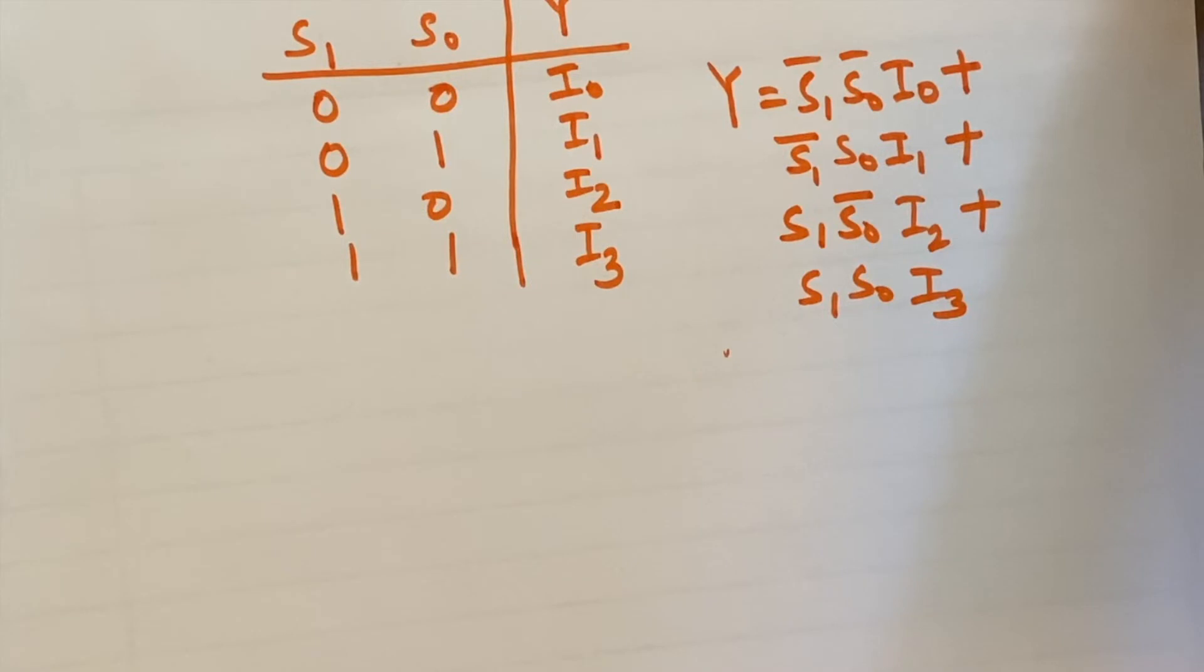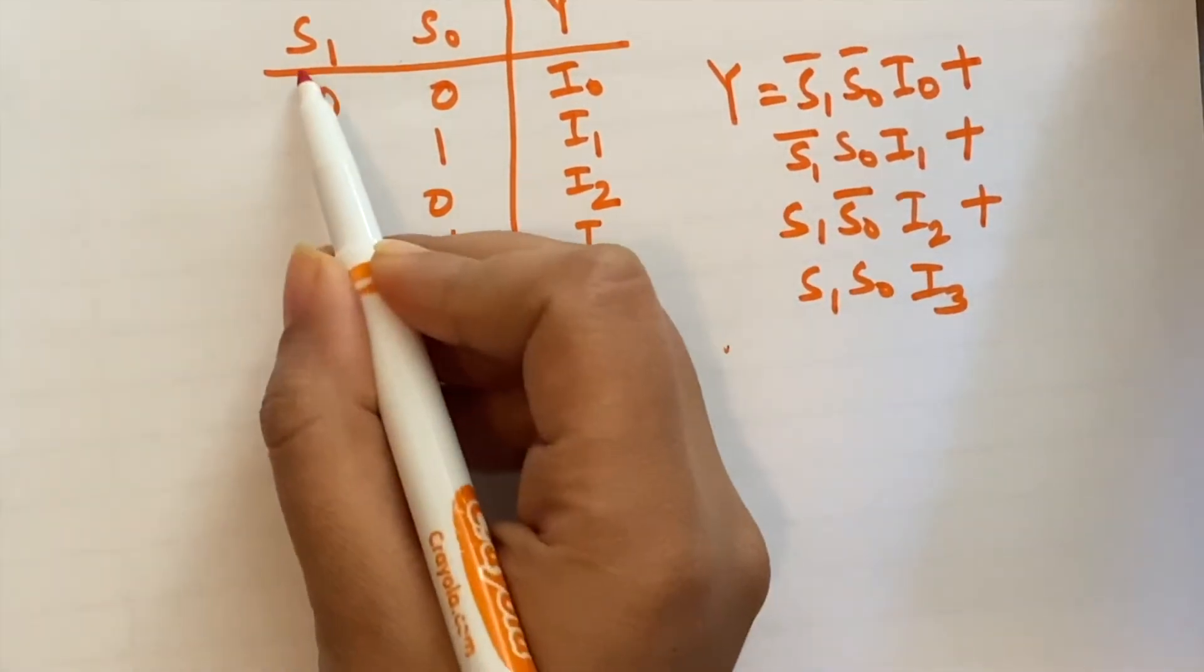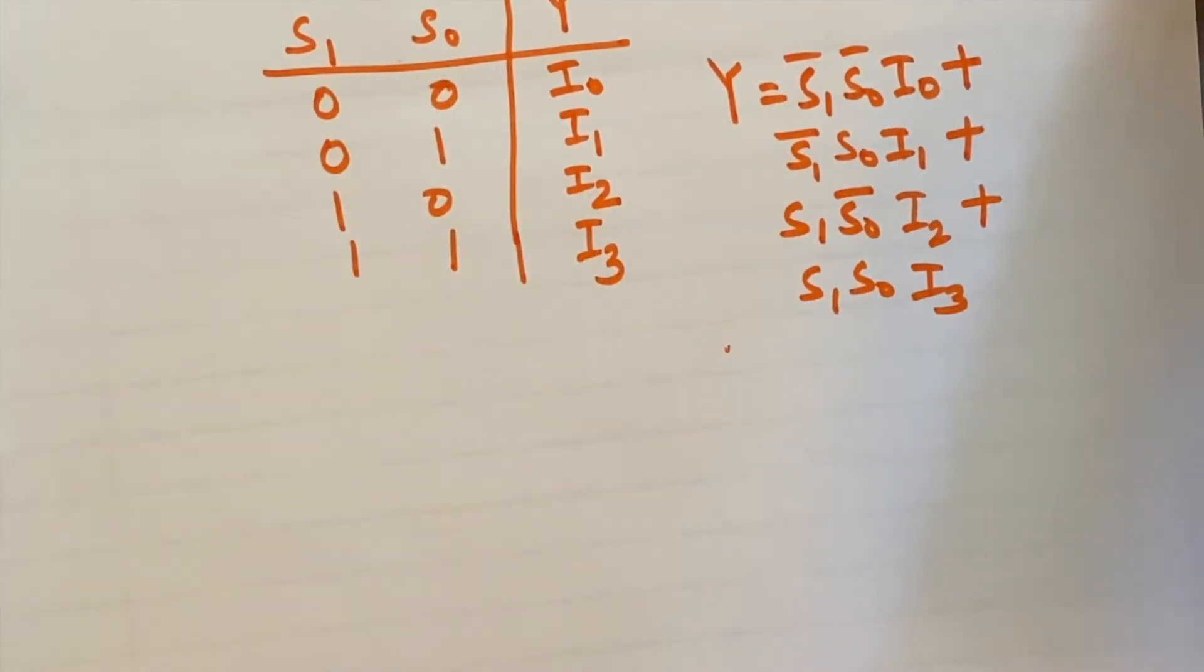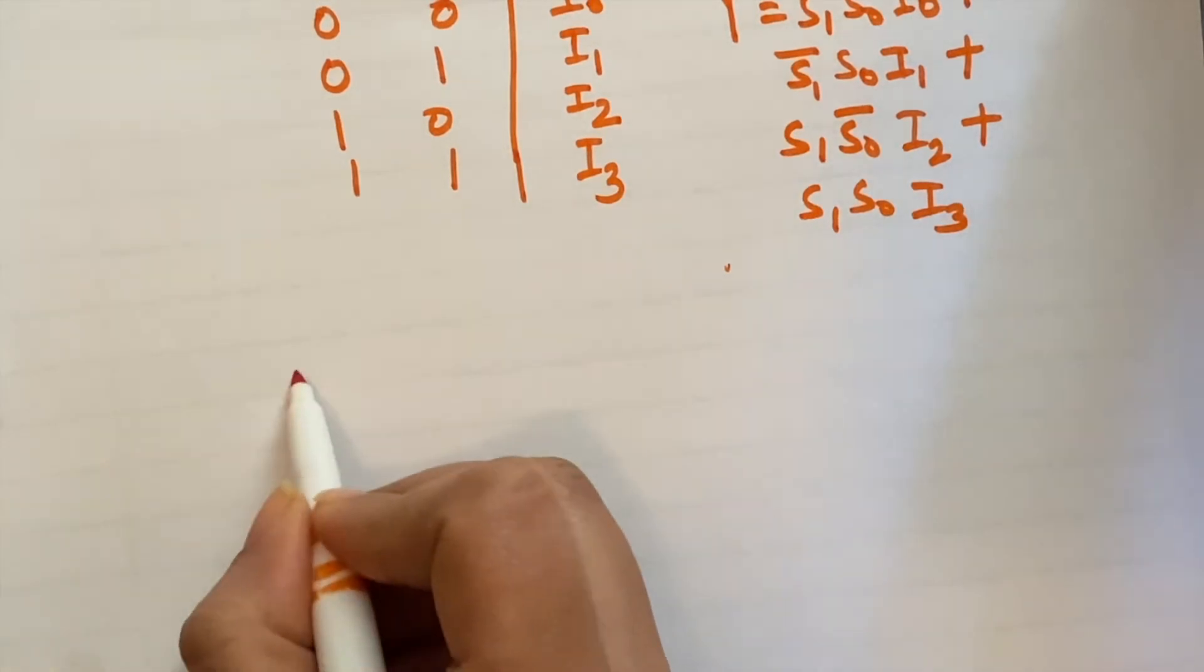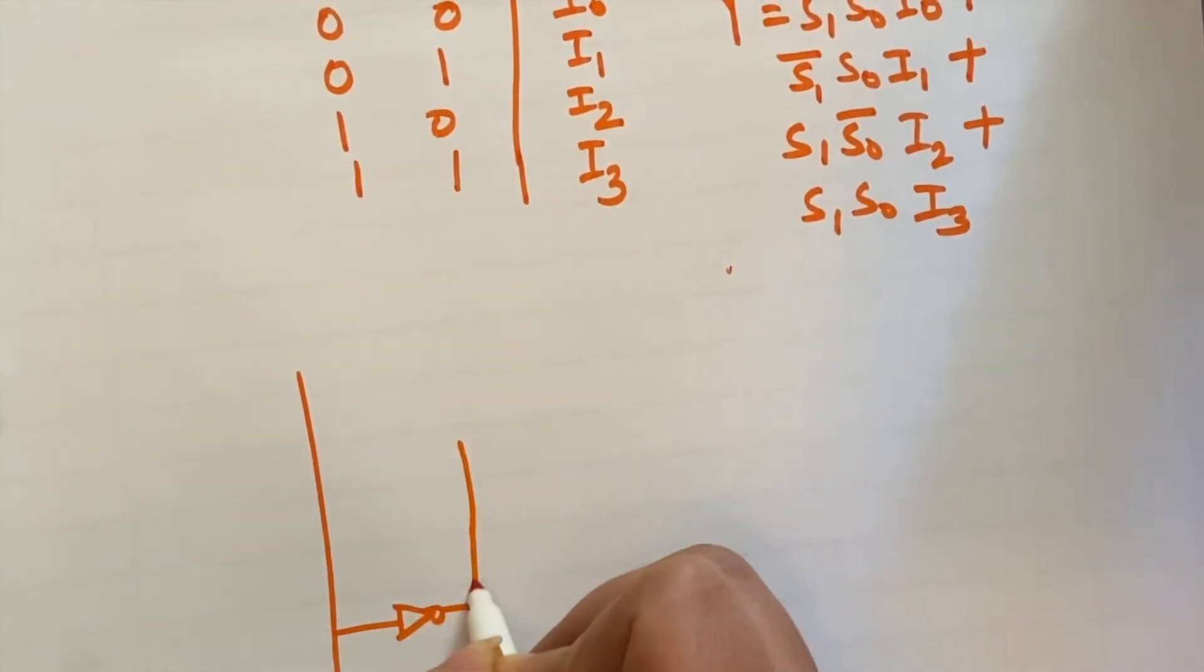Now we will make this circuit using the logic gates by the help of this expression. So here s1 and s0 are two selection lines, so first we will draw s0 and s0 bar, s1 and s1 bar.